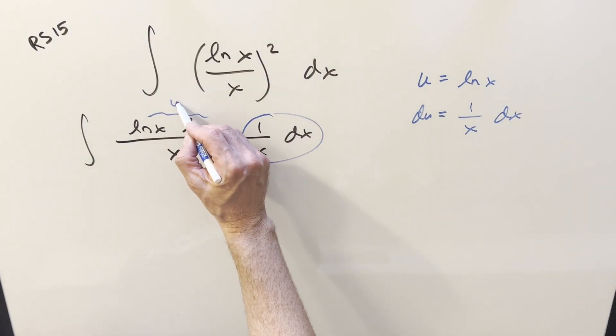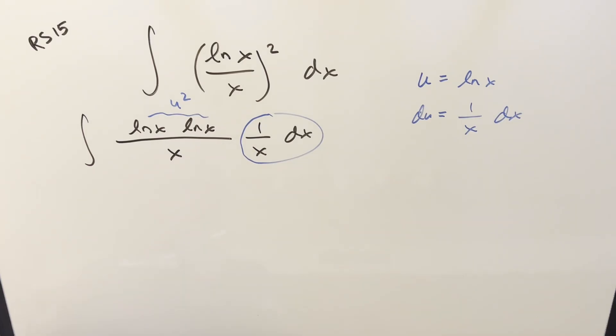This is going to become u squared. What about the x? Well, let's just take this and solve for x. Using the log properties, we can write this as x equals e to the u.